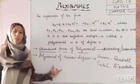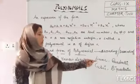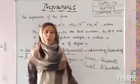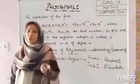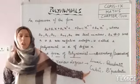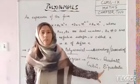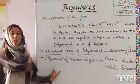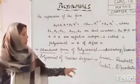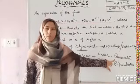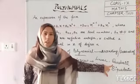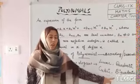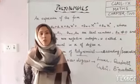Next, polynomials of various degrees: a linear polynomial has degree 1, meaning highest power 1. A quadratic polynomial has degree 2. A cubic polynomial has degree 3. And biquadratic has degree 4. Linear means a polynomial with degree 1, quadratic means degree 2, cubic means degree 3, and biquadratic means degree 4.